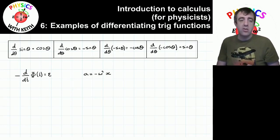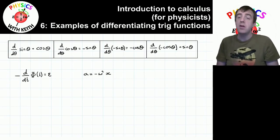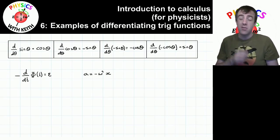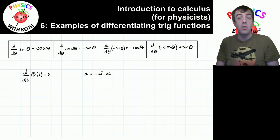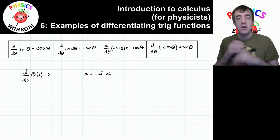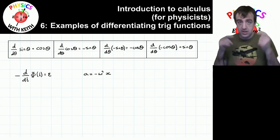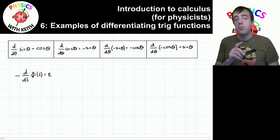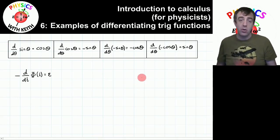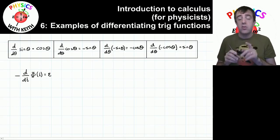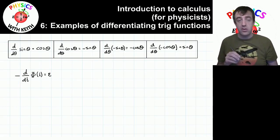Below that I've written two equations. The one on the bottom left is Faraday-Lenz's Law, which allows you to calculate the EMF at a given time by differentiating the flux linkage as a function of time with respect to time. The equation at the bottom right is the definition of simple harmonic motion. Both of these examples need us to use something called the chain rule, and I'm going to start with the Faraday-Lenz's Law example.